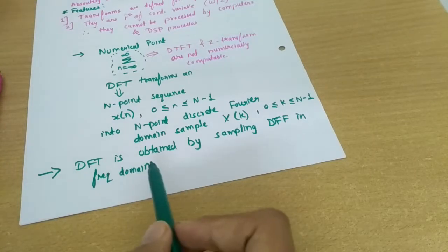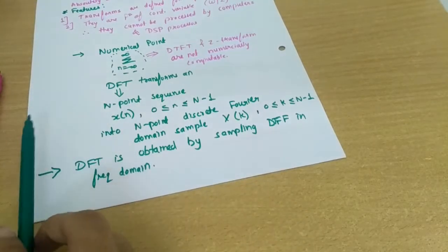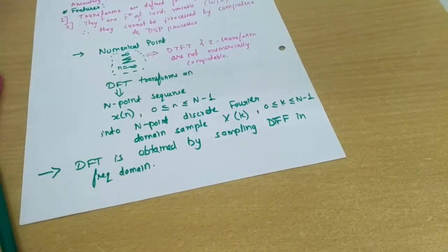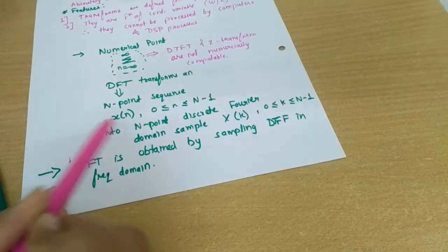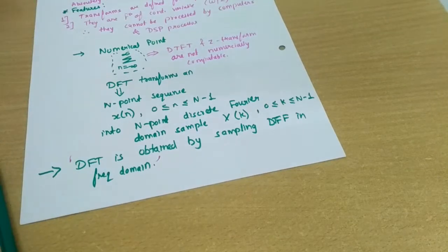So in frequency domain, or in case of Z transform we can say on unit circle. So we have to sample it on a unit circle or in frequency domain, because unit circle is nothing but Z transform on a unit circle becomes Fourier transform only. So we can say this point is very important - that DFT is obtained by sampling DTFT in frequency domain.